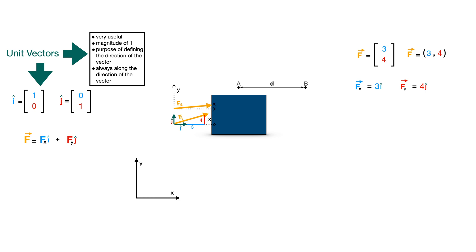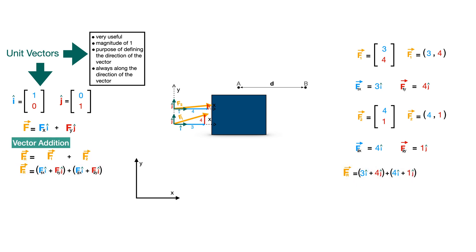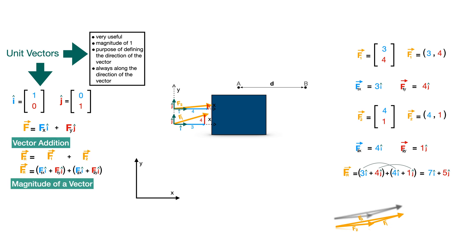What if there are two forces acting on the box? To calculate the resultant of these forces and determine what will happen to the box, we add these vectors by adding their corresponding components. Vector addition can also be carried out by joining the head of the first vector with the tail of the other; the resultant vector is then obtained by joining its tail with the tail of the first vector and its head with the head of the second vector. You can also find the magnitude of any vector using the standard magnitude formula.